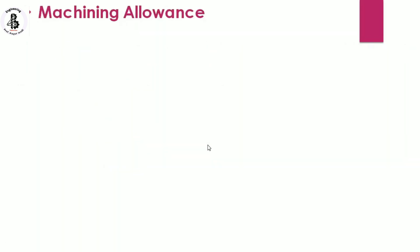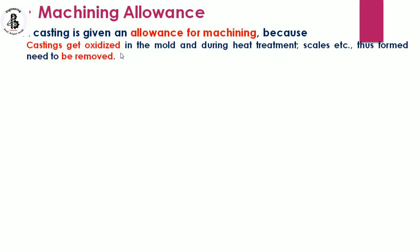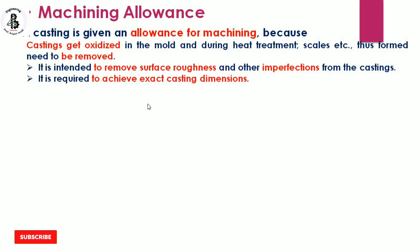The second allowance is machining allowances. Castings are given a machining allowance because during solidification they become oxidized in the mold, and during heat treatment, scales form that need to be removed. This is also intended to remove surface roughness and other imperfections, and to achieve exact casting dimensions through machining processes such as grinding and drilling.